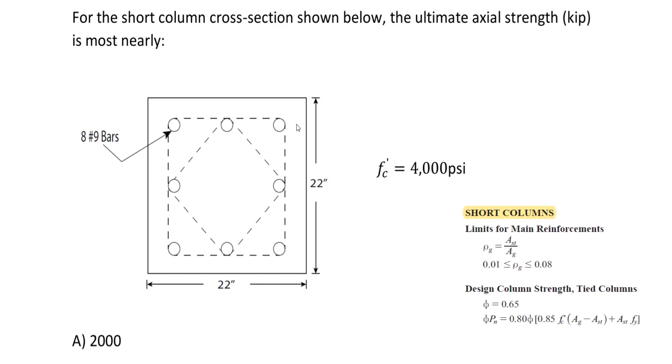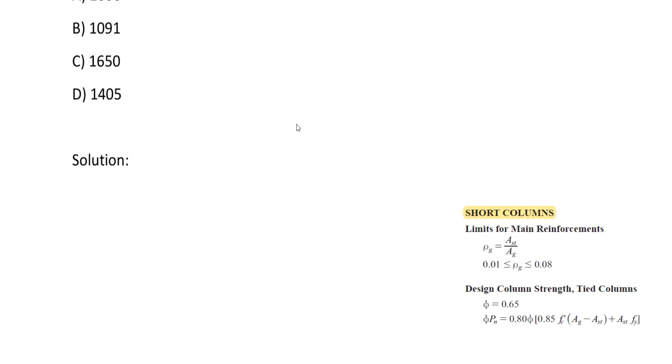Looking at that, we know that the phi value is always 0.65. We can determine the ultimate axial strength by using that equation.